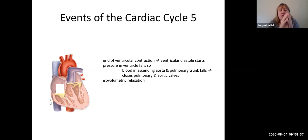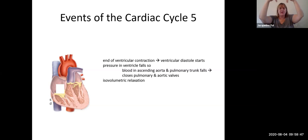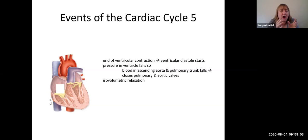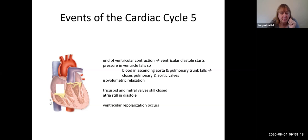At the end of ventricular contraction, ventricular diastole starts — the ventricles begin relaxing, so pressure in the ventricles plummets. This causes blood in the aorta and the pulmonary trunk to flow back down toward their valves and close the pulmonary and aortic valves. This is called isovolumetric relaxation because the volume is not changing since all four valves are momentarily closed. Whatever blood got out of the ventricles got out, and no new blood is coming in yet.